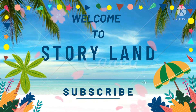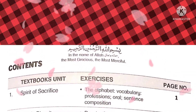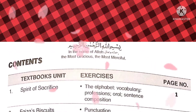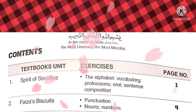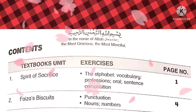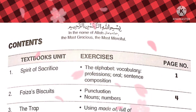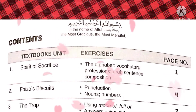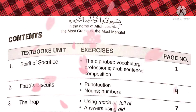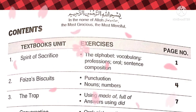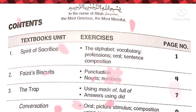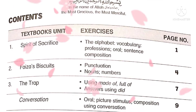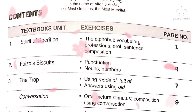We will begin with Book 2. The first chapter is named 'The Spirit of Sacrifice.' We will discuss the alphabet, vocabulary, professions, oral sentences, and composition. The second unit is 'Fizza's Biscuit,' where we will also read about punctuation, nouns, and numbers.